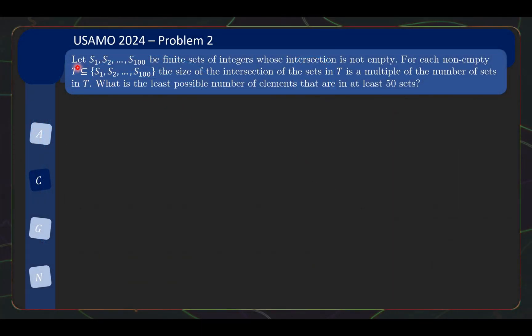So problem 2 is as follows. Let S1 to S100 be finite sets of integers whose intersection is not empty. For each non-empty T subcollection of S1 to S100, the size of the intersection of the sets in T is a multiple of the number of sets in T. What is the least possible number of elements that are in at least 50 sets?